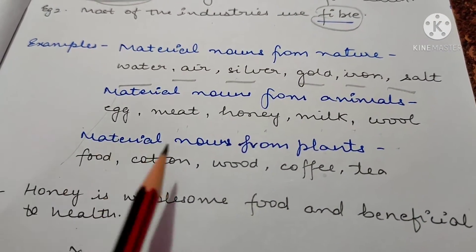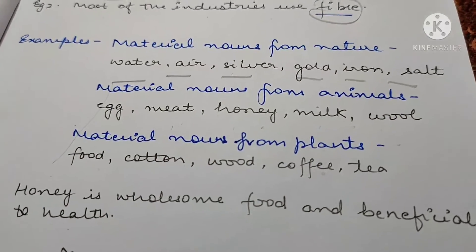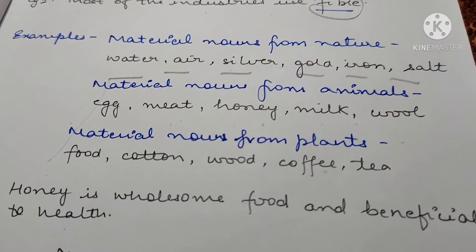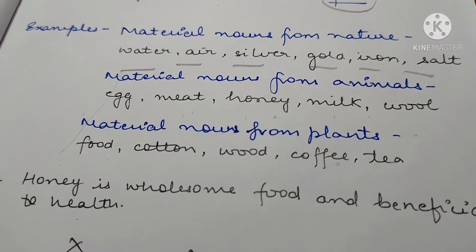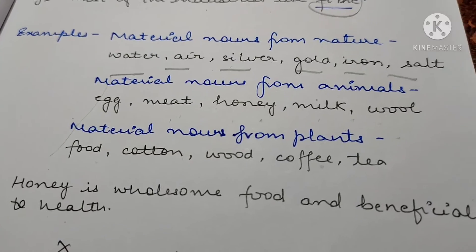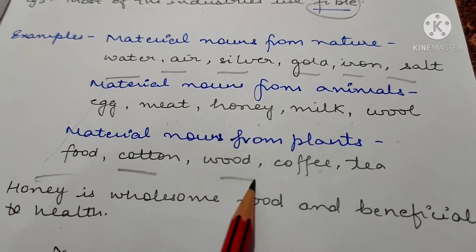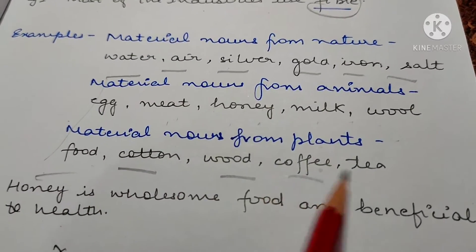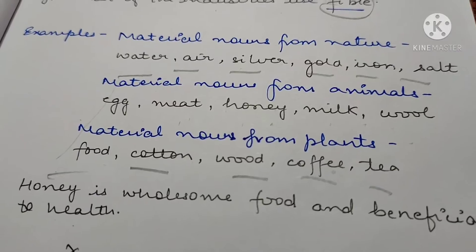And material nouns from plants — plants سے آپ کو کیا چیزیں ملتی ہیں. We have food, cotton, wood, coffee, tea. So these are the material nouns from plants.